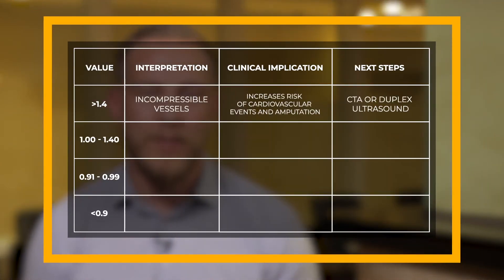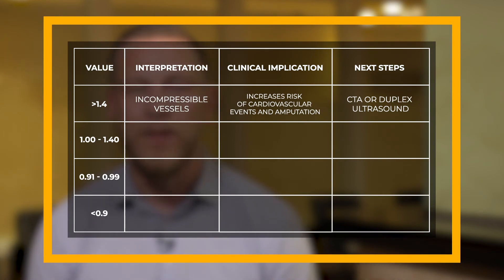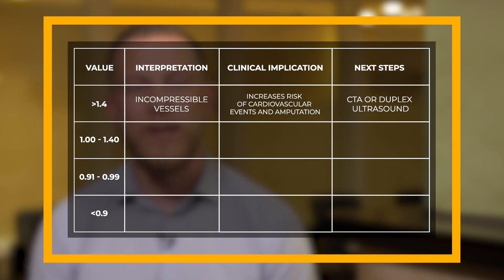Based on the current literature and the latest American Heart Association guidelines, the following are the accepted ranges for ABI interpretation. Values greater than 1.4 indicate incompressible vessels, which are more common in individuals with diabetes and chronic kidney disease. Individuals with an ABI greater than 1.4 have an increased risk of amputation and cardiovascular events, and they should be further investigated with CT angiography or duplex ultrasound.